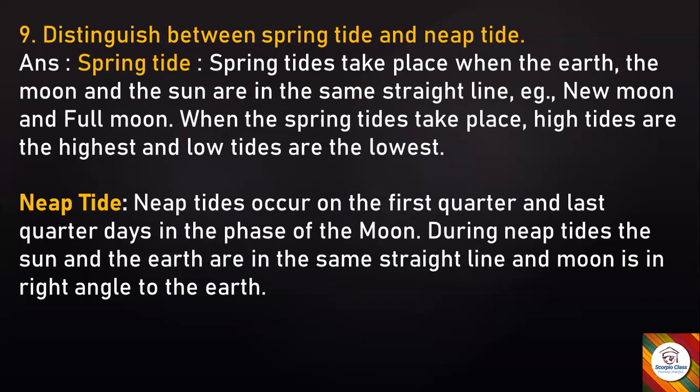Neap tides occur on the first quarter and last quarter days in the phase of the moon. During neap tides, the sun and the earth are in the same straight line and the moon is at a right angle to the earth.